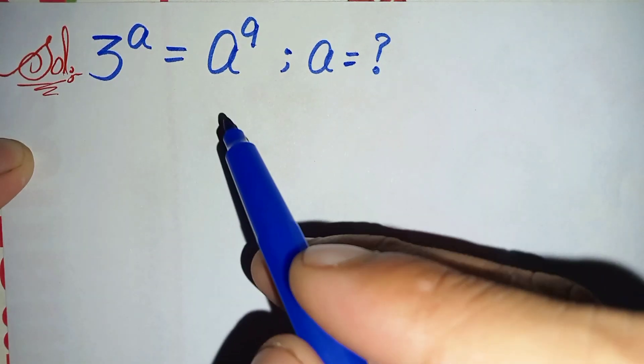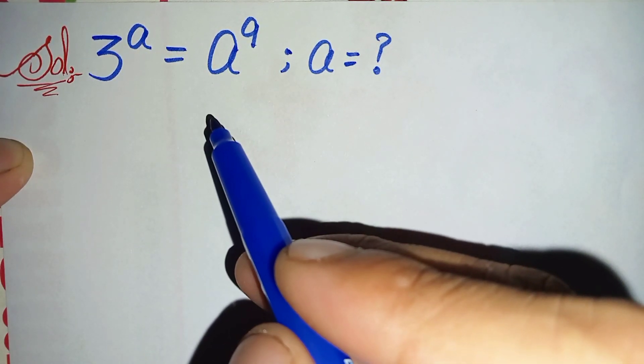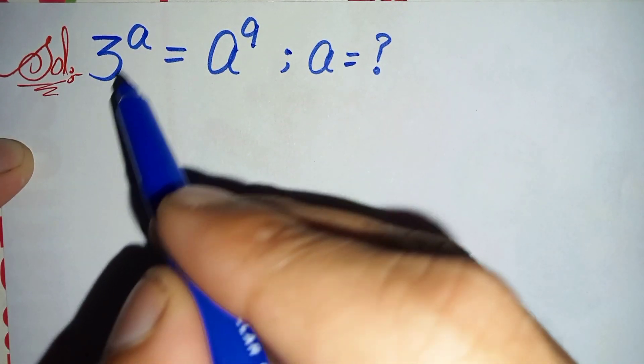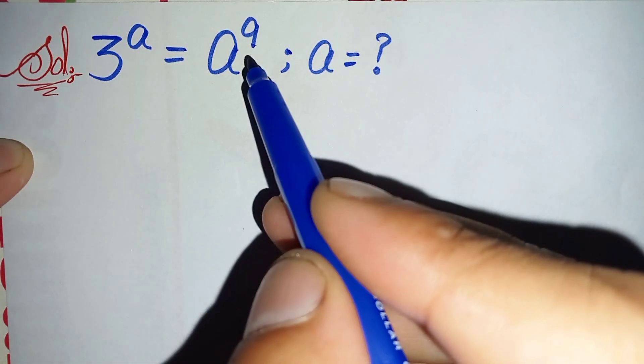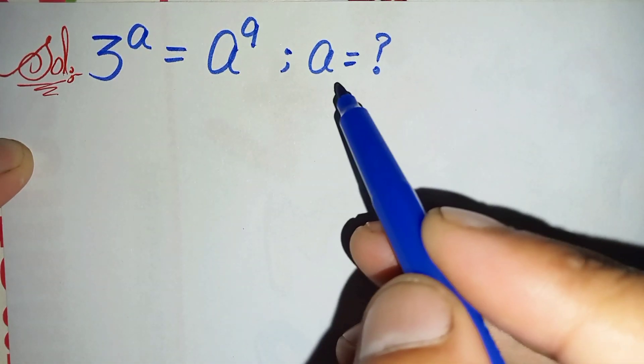Hi everyone. How to solve this nice exponential math problem, which is 3 raised to the power a is equal to a raised to the power 9. So here we will try to find a.